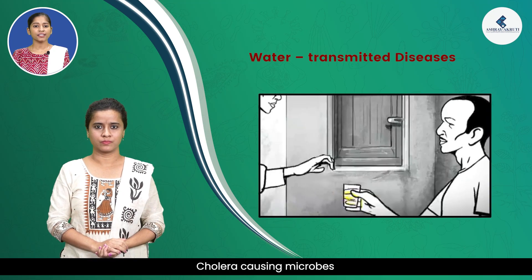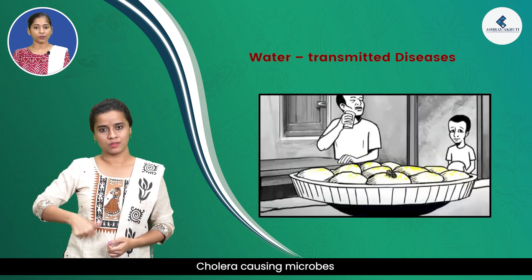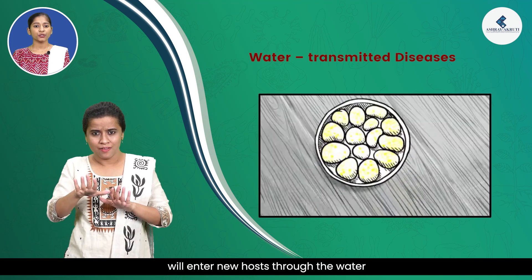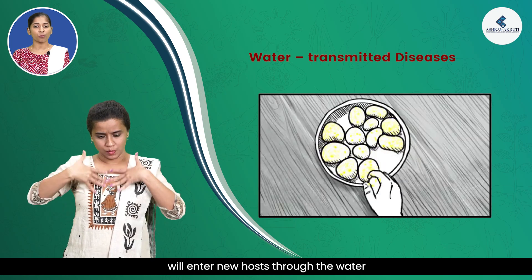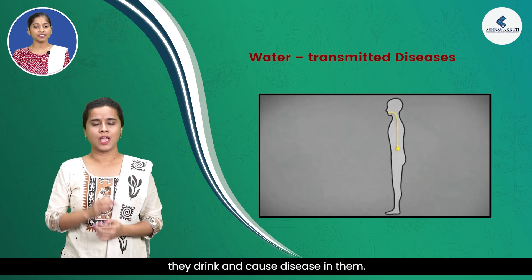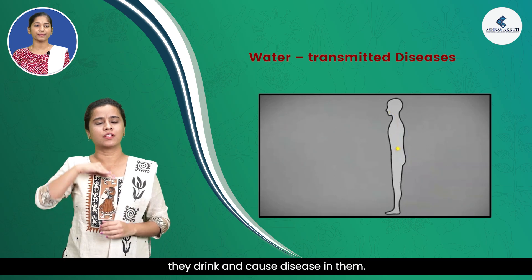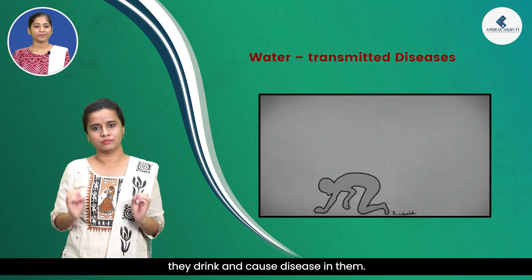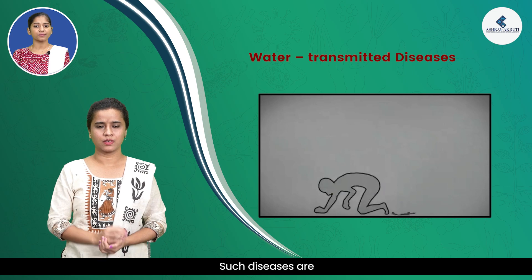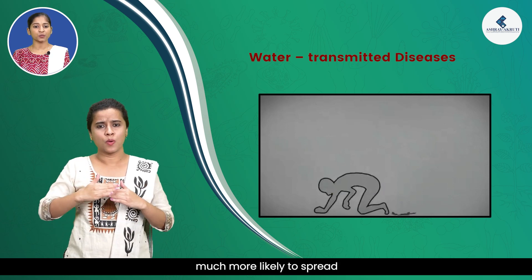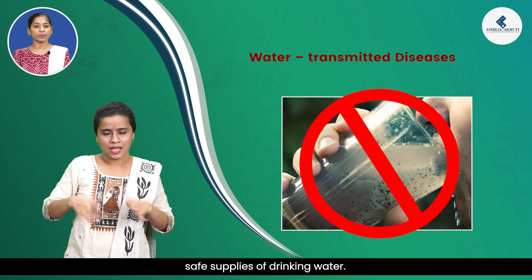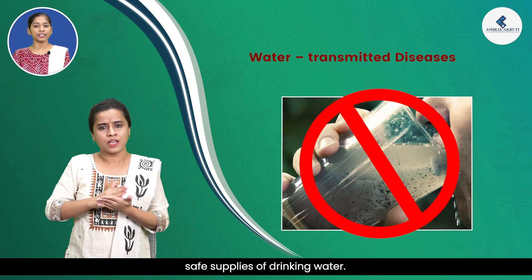such as cholera, gets mixed with the drinking water used by people living nearby. Cholera-causing microbes will enter new hosts through the water they drink and cause disease in them. Such diseases are much more likely to spread in the absence of safe supplies of drinking water.